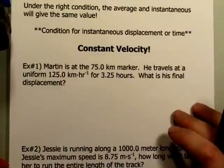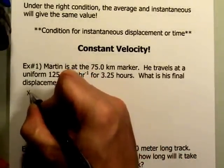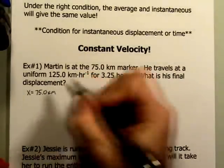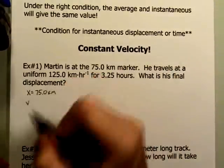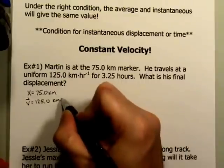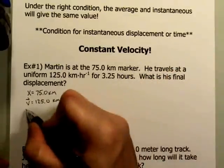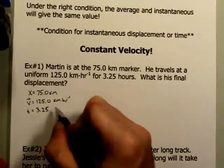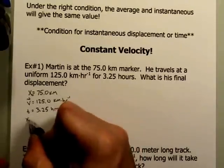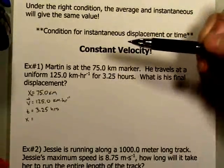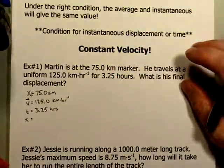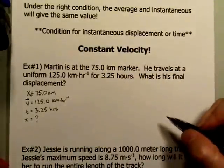Let's list out everything given. Our initial displacement is 75 kilometers. We're going to travel at a uniform 125.0 kilometers per hour. We're going to do that for 3.25 hours. What I want to know is my final displacement. Very carefully, you label the 75 kilometers as X-naught, the initial displacement. That's our question: What is our final displacement?